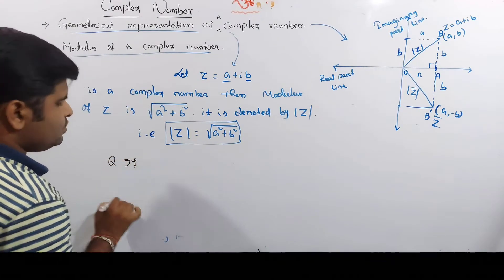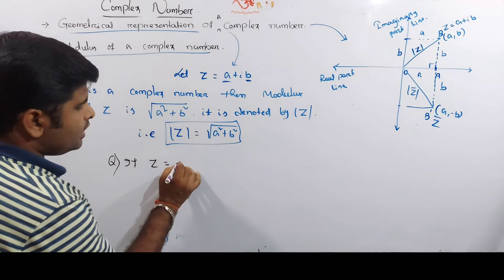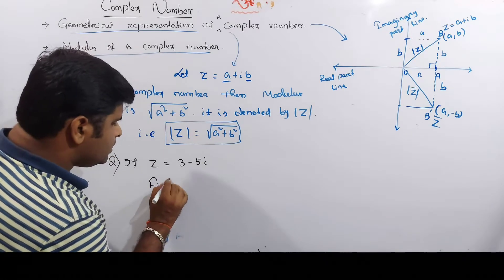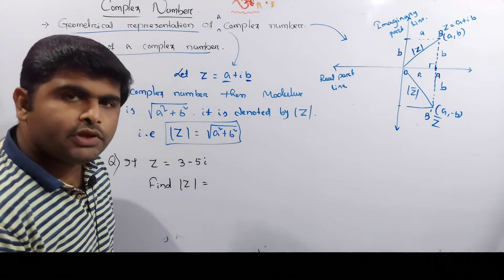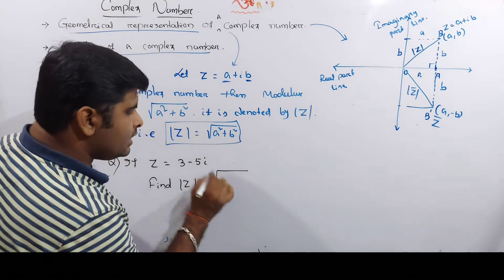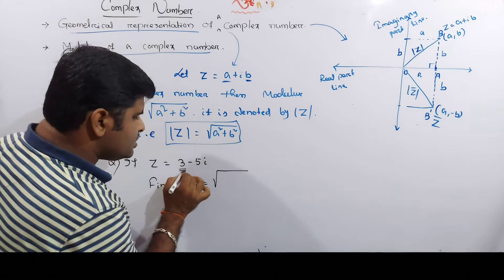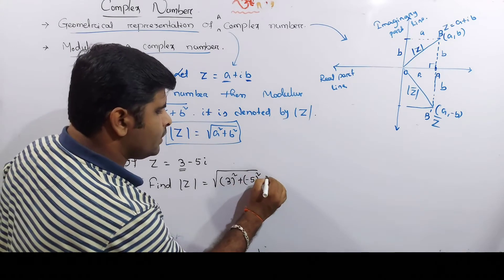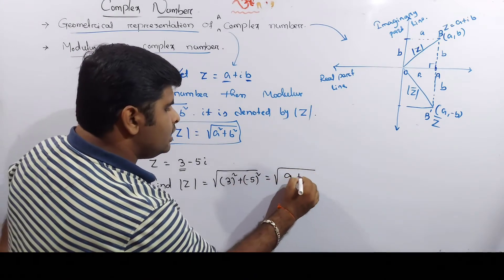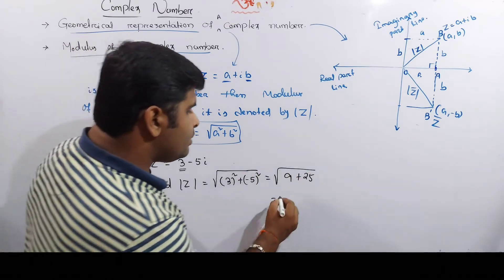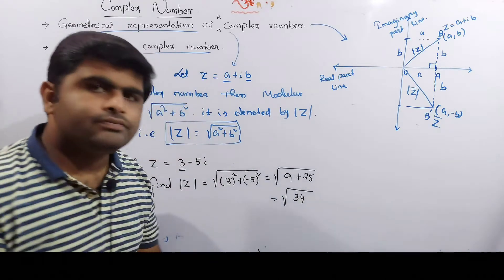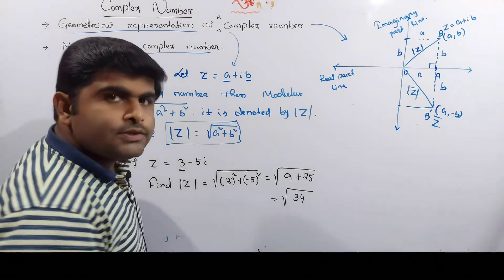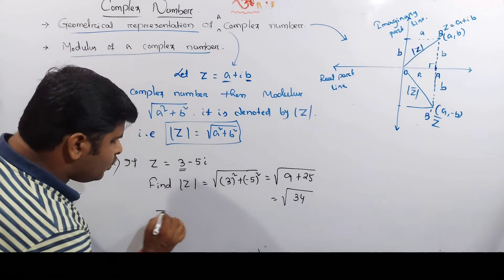Let's do an example. We have z equals 3 minus 5i. Find the modulus of z. Using the formula, modulus of z equals the square root of a squared plus b squared, where a is 3 and b is minus 5. So we get the square root of 3 squared plus 5 squared, which is the square root of 9 plus 25, which equals the square root of 34.